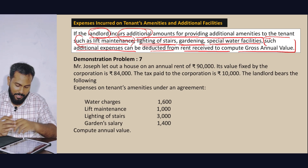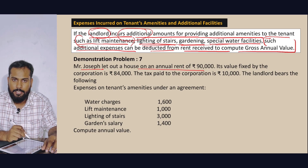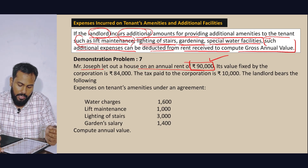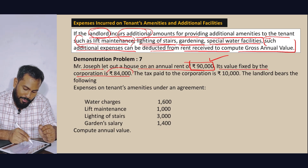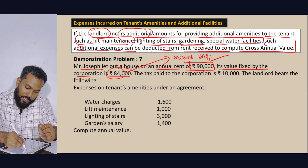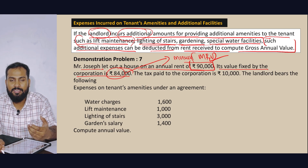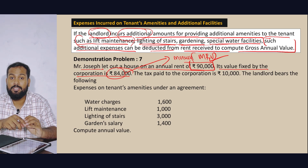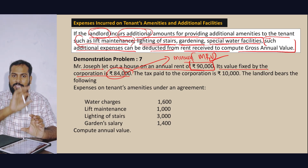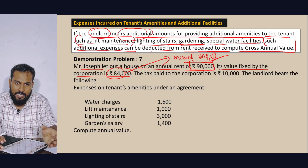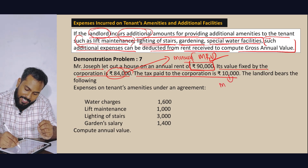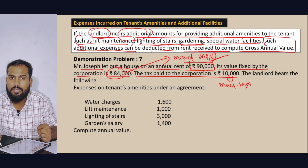Municipal Rental Value (MRV) is the rental value fixed by the municipality or the corporation. The tax paid to the corporation is the municipal tax. The municipality sets the rental value, and the municipal tax is a separate payment.